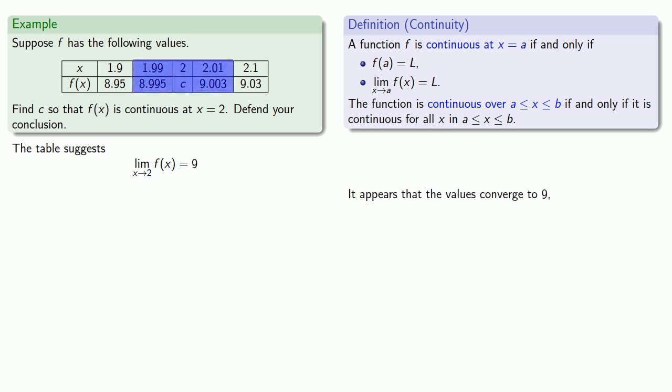So if our function value is equal to 9, then our limit as x approaches 2 and our function at 2 are the same, and so our function will be continuous at x equals 2.